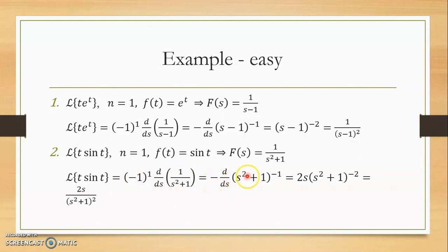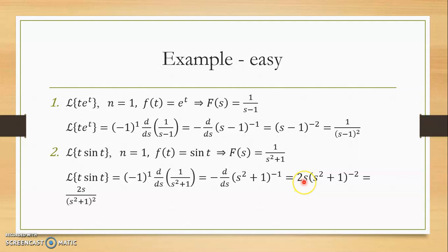We write 1/(s²+1) in the form of (s²+1)^(−1). Differentiating: bring minus 1 to the front — minus times minus 1 is positive — giving (s²+1)^(−2), then differentiate (s²+1) to get 2s. Therefore, the Laplace transform of t · sin(t) is equal to 2s/(s²+1)².